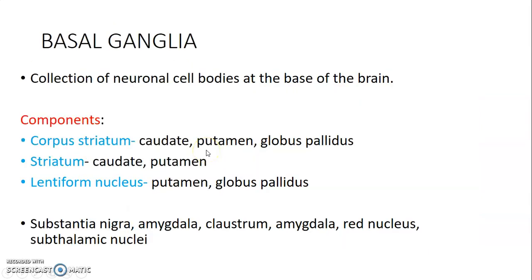Next we discuss the basal ganglia, also called the basal nuclei. Remember, a collection of neuronal cell bodies within the CNS is called a nucleus, while in the PNS it is called a ganglion. The components of the basal ganglia include the corpus striatum — made up of the caudate, putamen, and globus pallidus — the striatum, which is just caudate and putamen, and the lentiform nucleus formed by the putamen and globus pallidus.